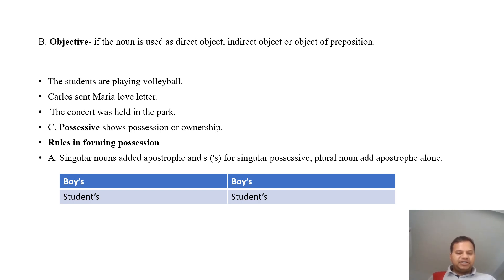Second is objective. If the noun is used as direct object, indirect object, or object of preposition. In this case, for example, students are playing volleyball. Carlos sent Maria love letter. The concert was held in the park.